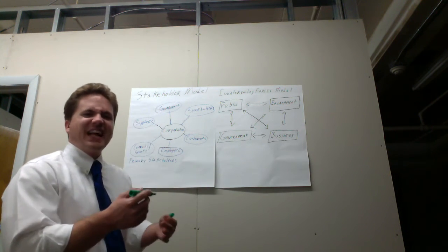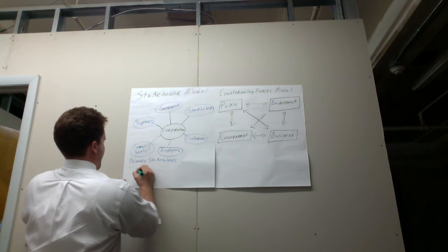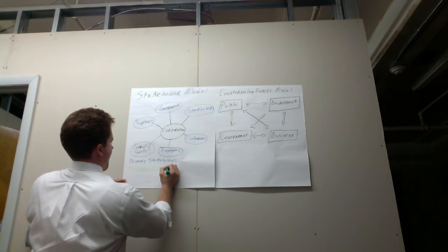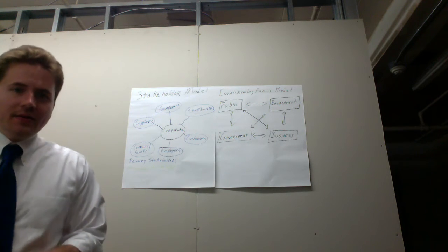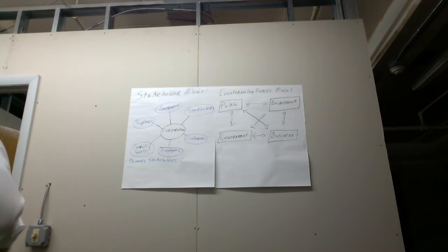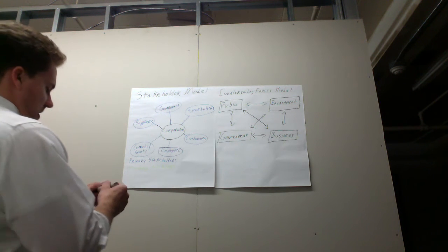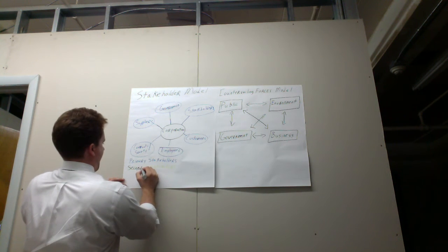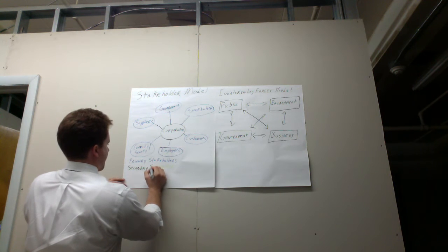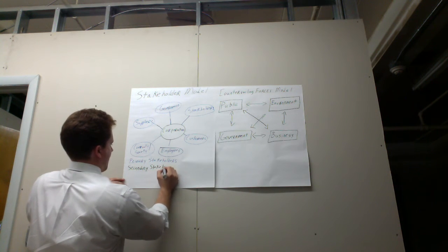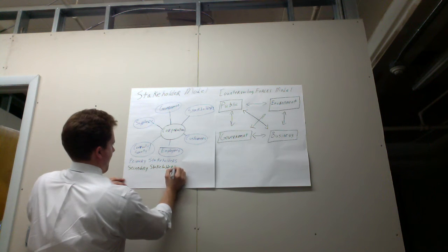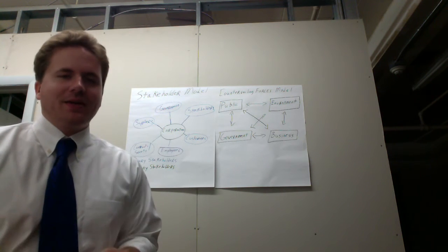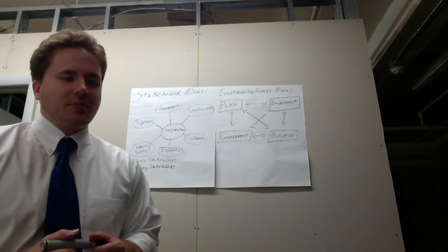We call these people secondary stakeholders. Now secondary stakeholders are impacted by the corporation, but usually less so. And they can really be anybody you can imagine. Some classic examples.